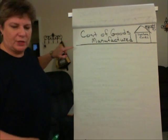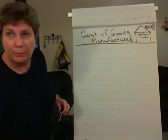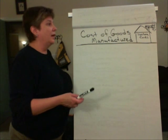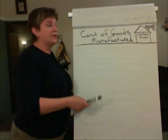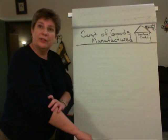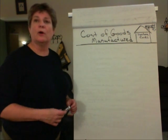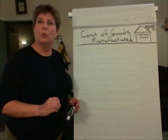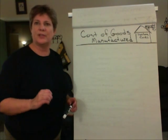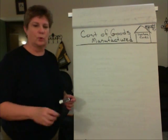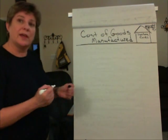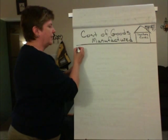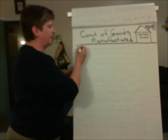Alright, so what's our starting point? The costs incurred in the factory are accumulated in the work in process inventory account, so that's our starting point: work in process inventory.